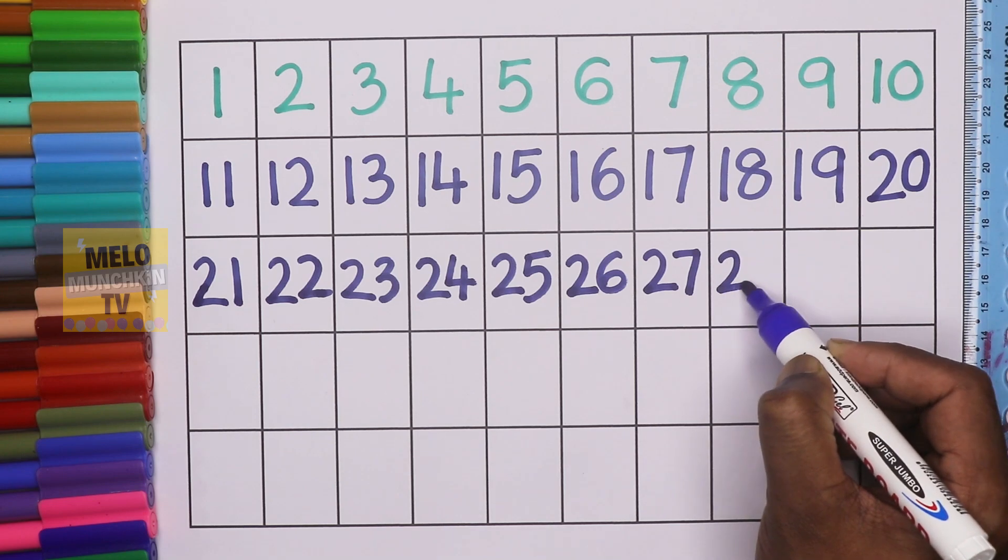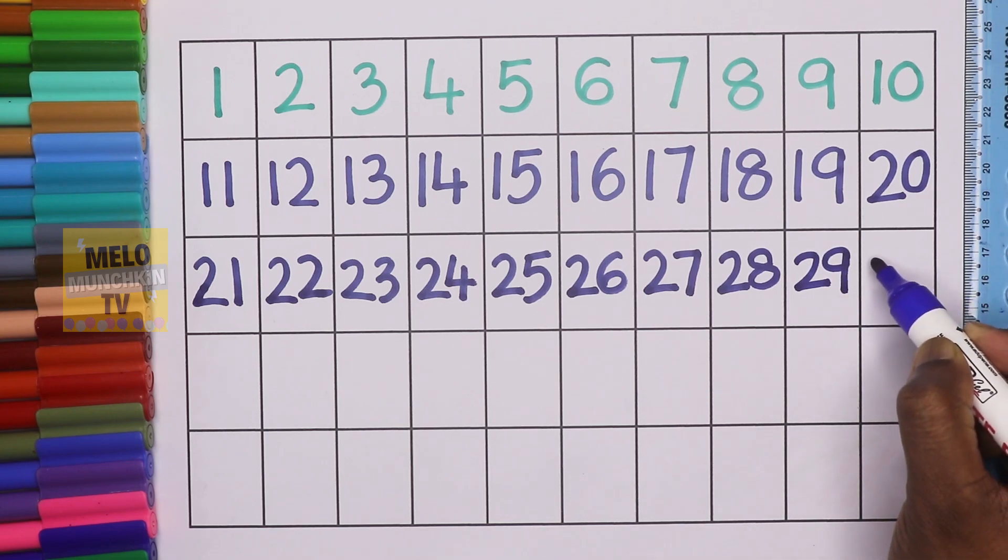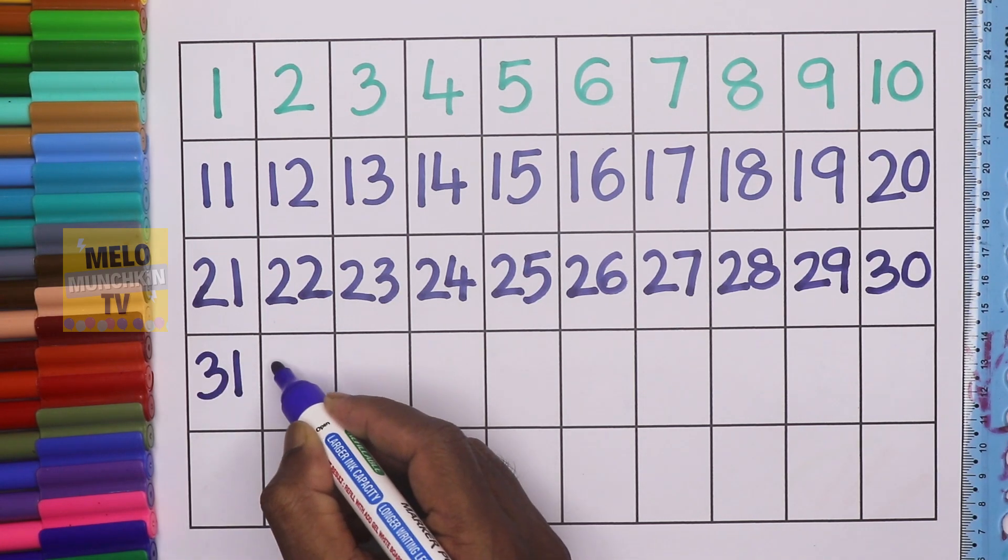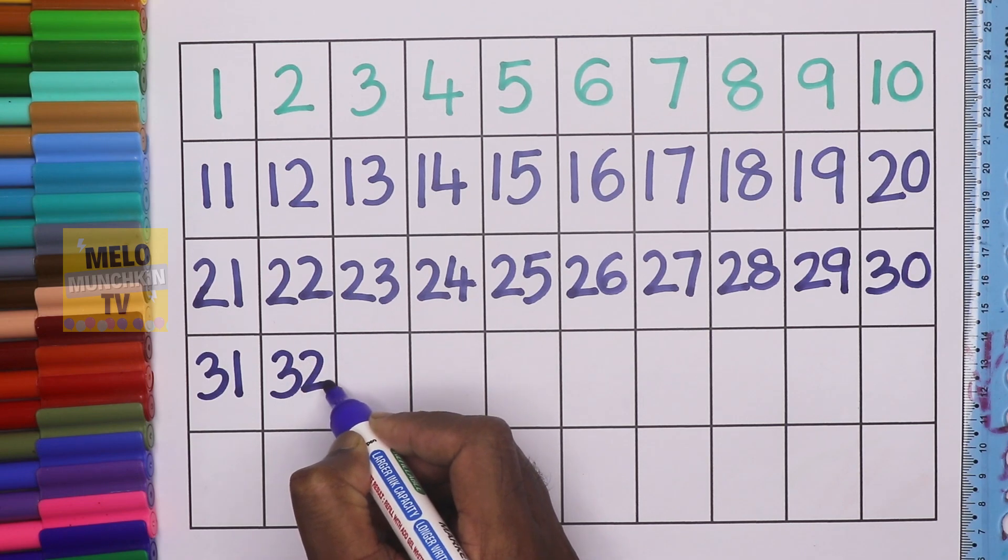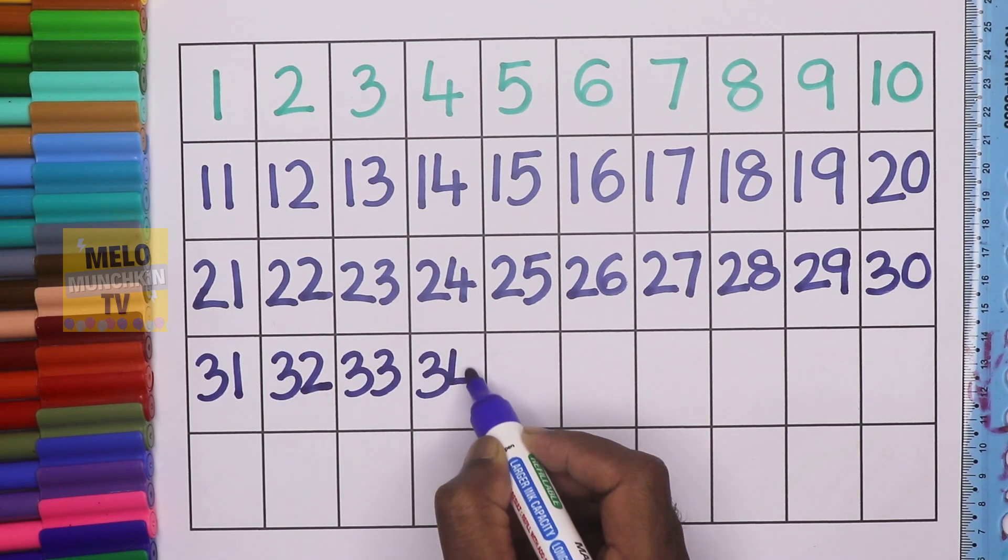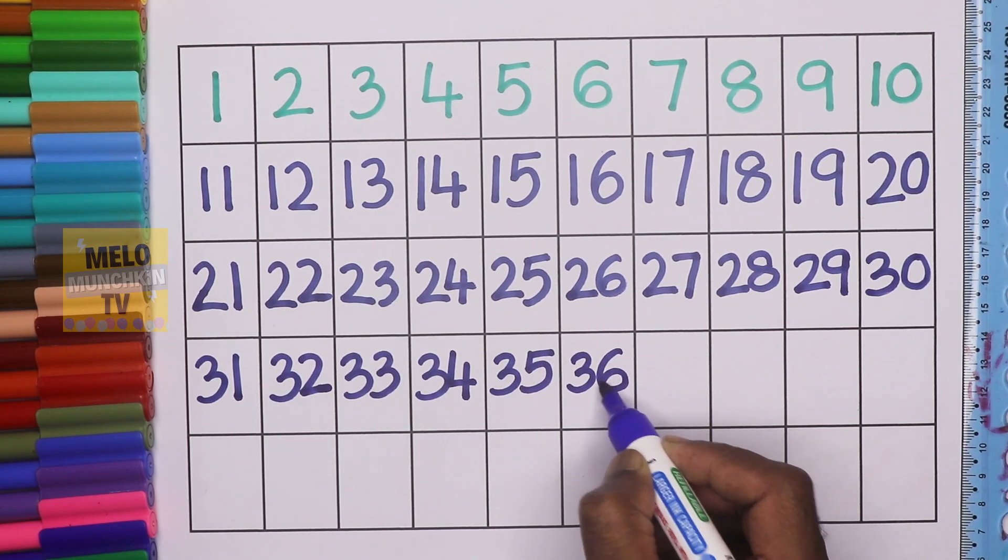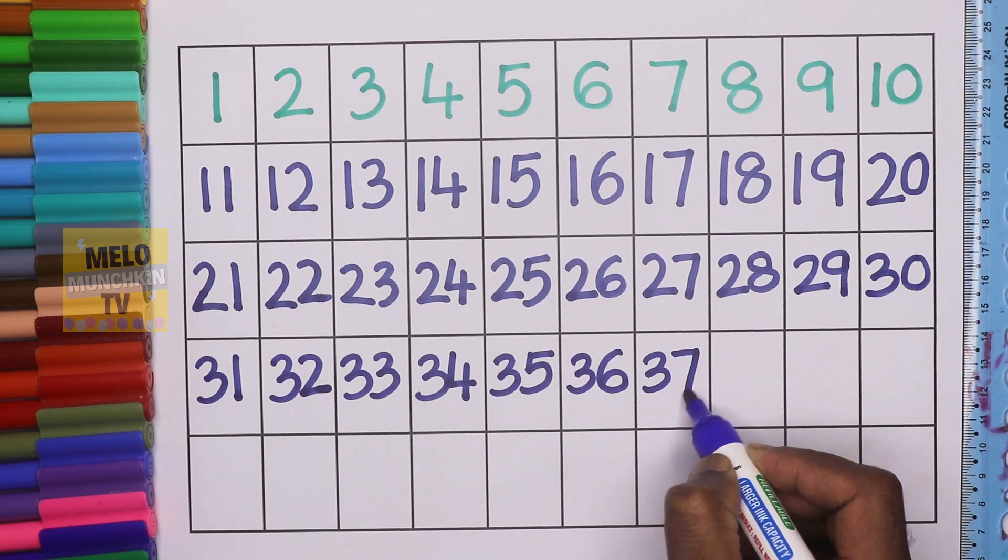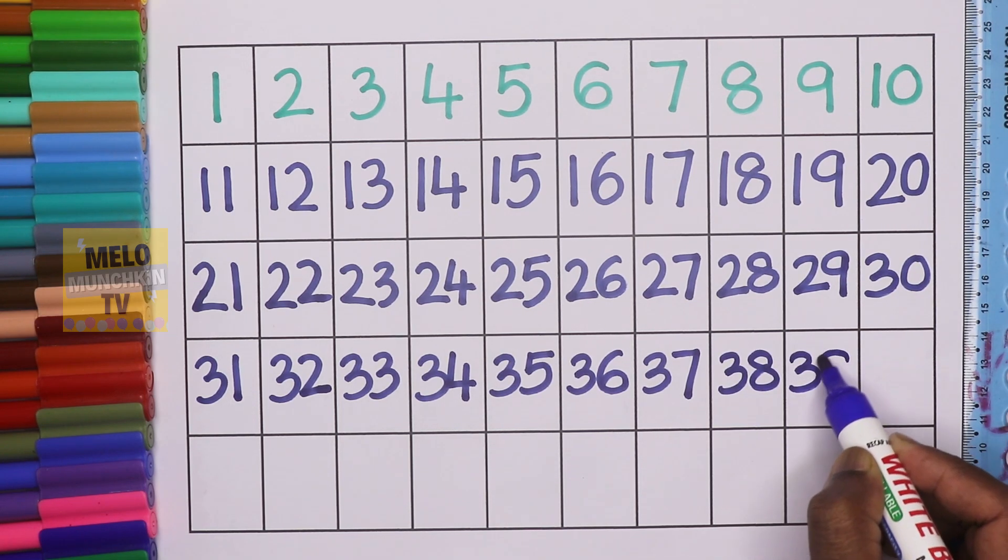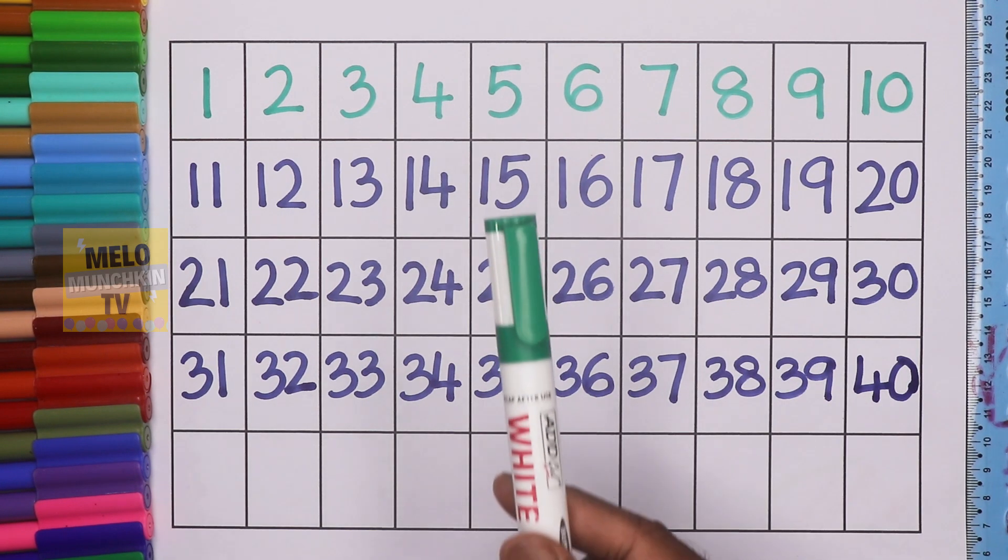27, 28, 29, 30, 31, 32, 33, 34, 35, 36, 37, 38, 39, 40. Green color.